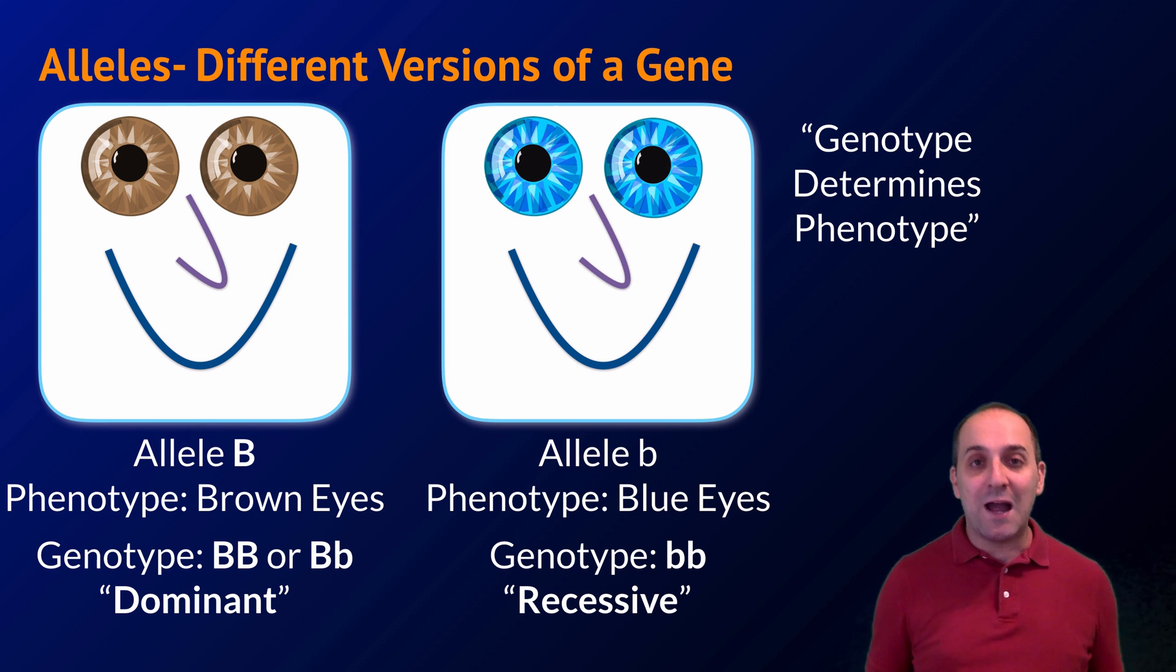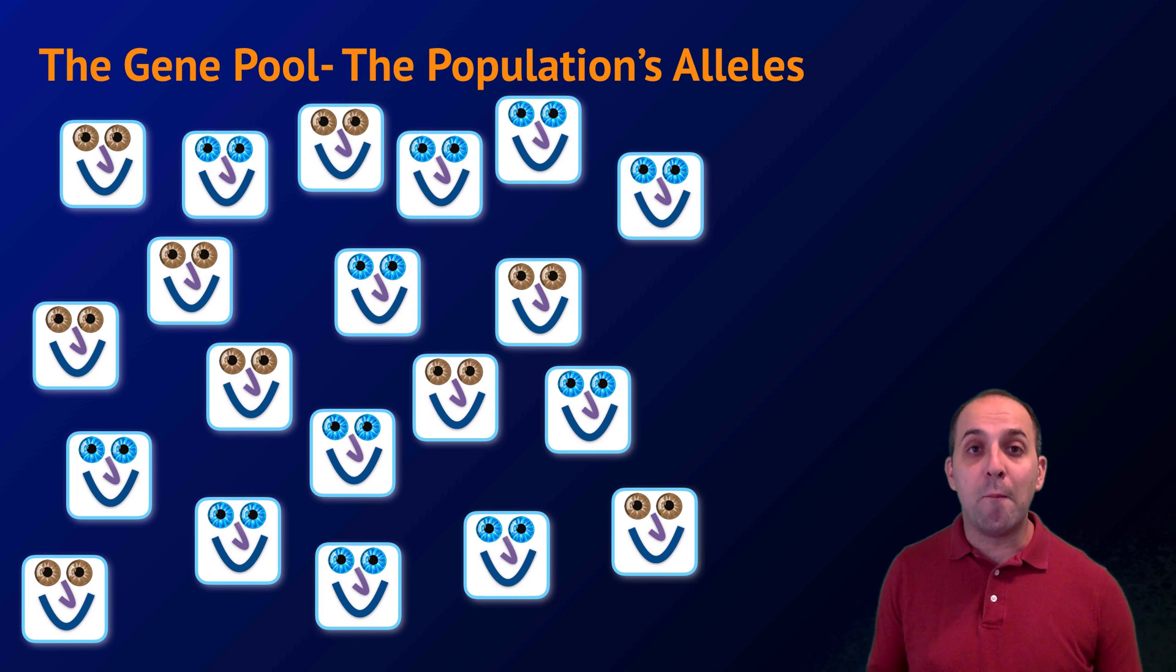At the same time, the inheritance of eye color in our fictitious smiley organisms is as simple as it seems. A big B is the brown eye allele, a little b is the blue eye allele, and the brown eye allele is dominant to the blue eye allele.